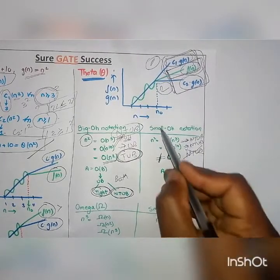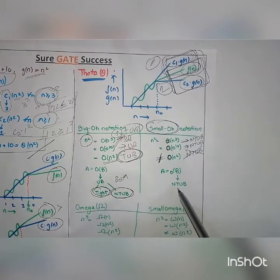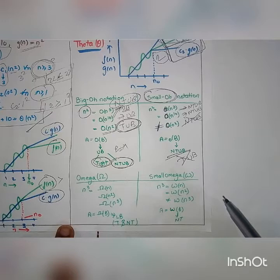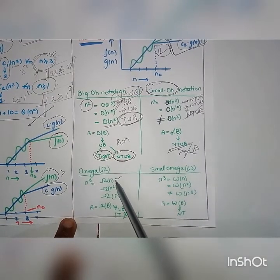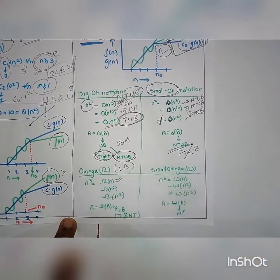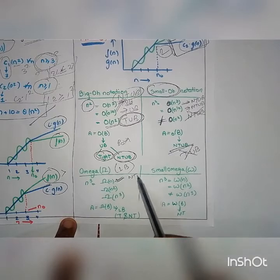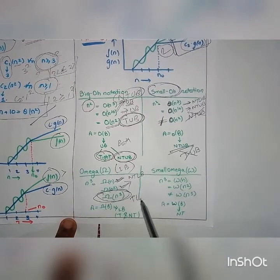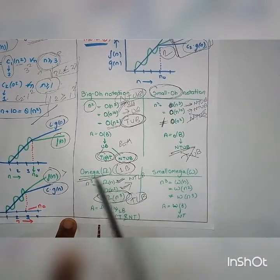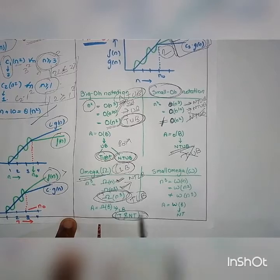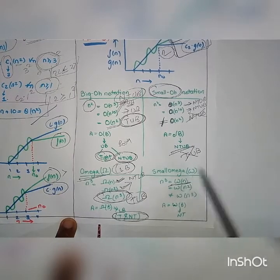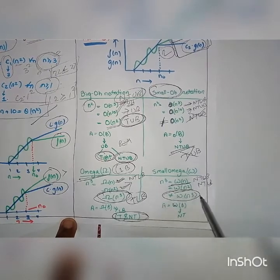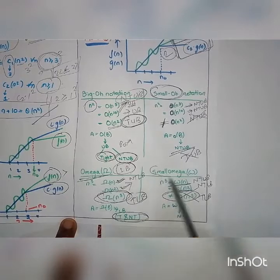Small-o notation contains only non-tightest upper bounds — tightest upper bounds are not allowed. Similarly, Omega deals with the lower bound. A non-tightest lower bound is smaller, while the tightest lower bound is accurately equal. Big Omega deals with both tightest and non-tightest lower bounds. Small omega deals with only non-tightest lower bounds — the tightest lower bound is not allowed in small omega.